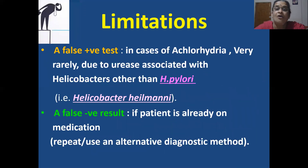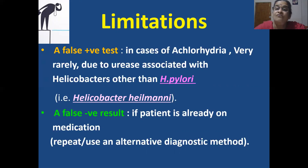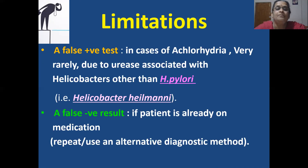Limitations of this test: a false positive can occur in cases of achlorhydria, where the acidic conditions of the stomach are absent due to some abnormality. In these non-acidic conditions, other urease-producing organisms such as Helicobacter heilmannii can survive and also degrade the 14 carbon urea capsule, so the result would not be exclusively for H. pylori detection. A false negative result can happen when the patient has not stopped their medication, so medication must be stopped and the test repeated, or an alternative diagnostic method used.